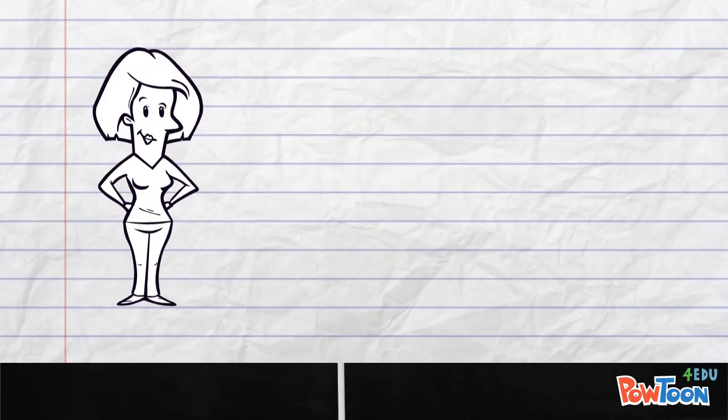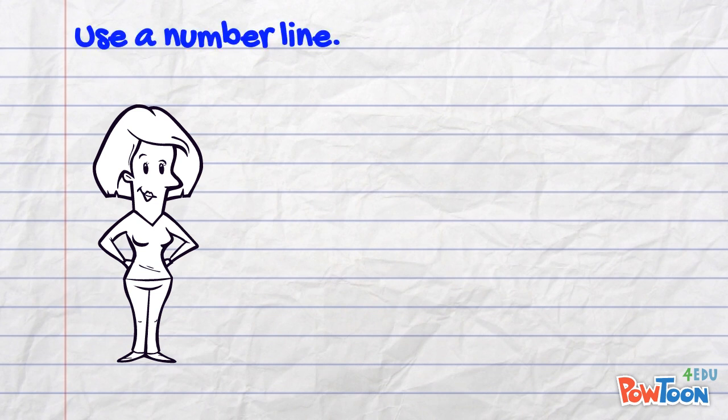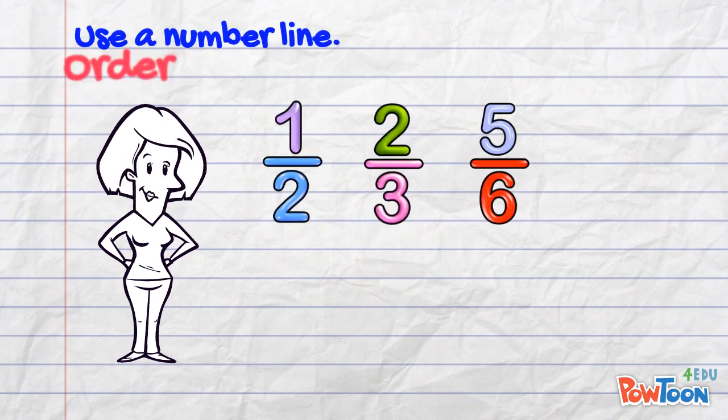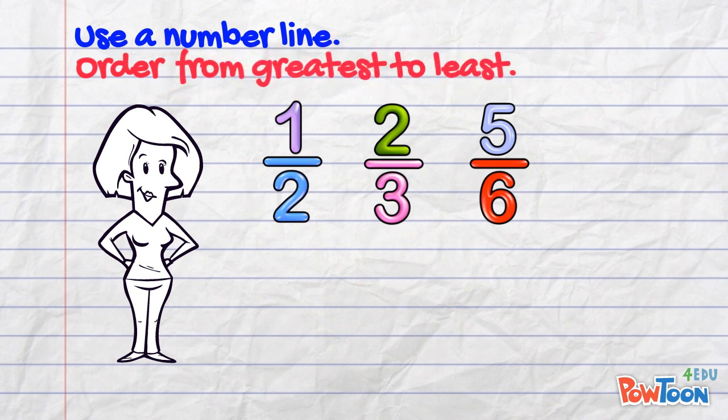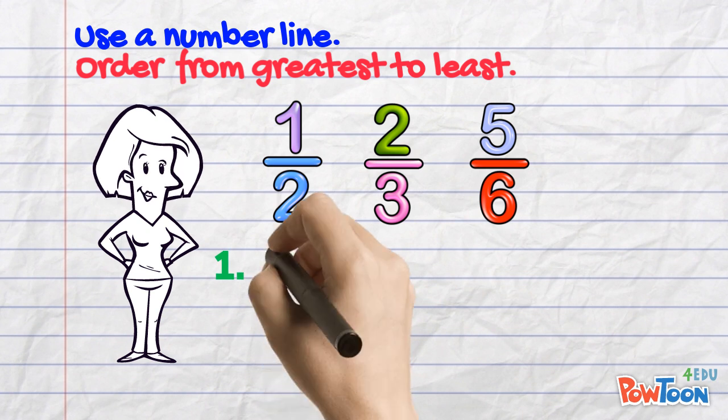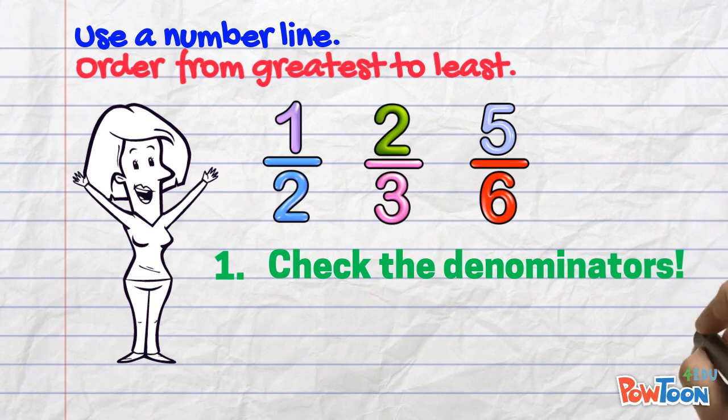Let's do one! We have to use a number line to put these fractions in order from greatest to least. When we compare fractions the first thing we always do is check the denominators!